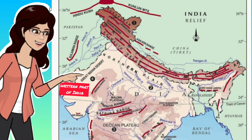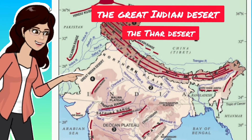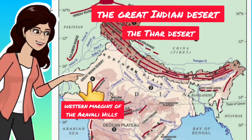For example, the western part of India. Here you can find the Great Indian Desert, also known as the Thar Desert. It lies towards the western margins of the Aravalli Hills. Let us know the important features of the Indian desert.